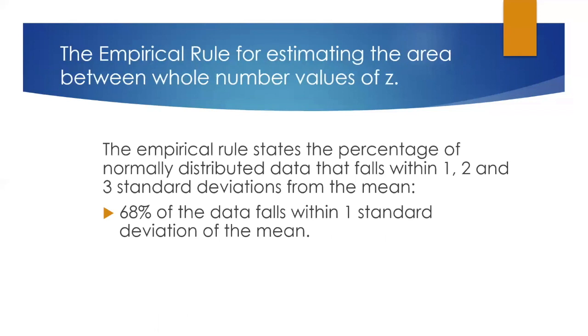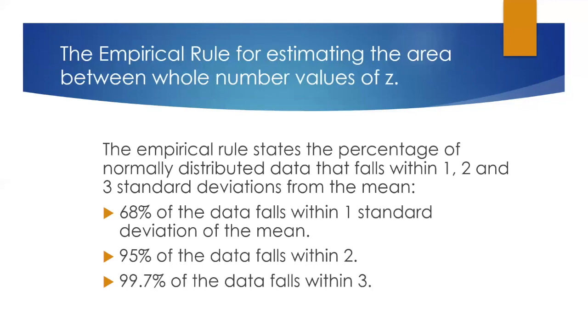We say that about two-thirds of the data is within one standard deviation of the mean. Then if you go out further, 95% of the data falls within two standard deviations of the mean, and 99.7% of the data falls within three standard deviations of the mean.